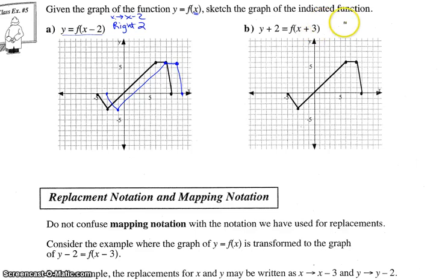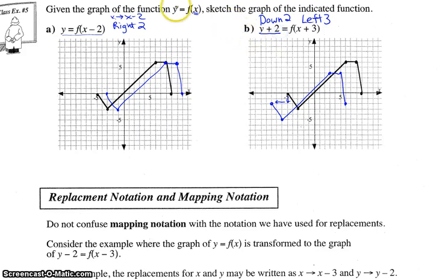You guys try the next one. First write down what your translations would be, then move the graph according to what you wrote down. For this one: y plus two replaced y, so therefore we moved down two. x was replaced with x plus three, so therefore we moved left three. Each one of those points you're going to move down two and left three.